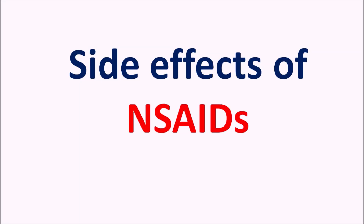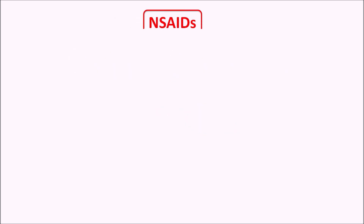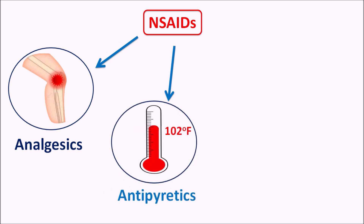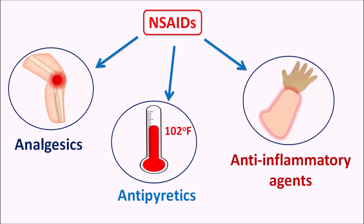Hi everyone. Today in this video we are going to discuss about side effects of NSAIDs in an easy way. NSAIDs are the non-steroidal anti-inflammatory drugs. These drugs are mainly useful as analgesics, where they reduce the pain sensation, and they are also useful as antipyretics. They can reduce the body temperature, and many of the NSAIDs can also act as anti-inflammatory agents. They can reduce the swelling associated with pain. NSAIDs are widely prescribed drugs to control pain as well as swelling and to reduce body temperature, but these drugs can produce variable side effects when they are used for chronic periods.